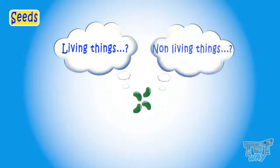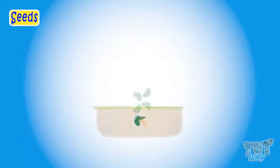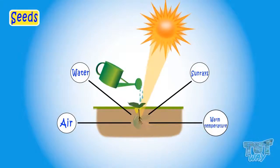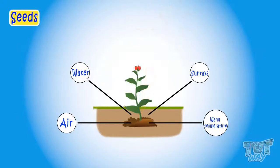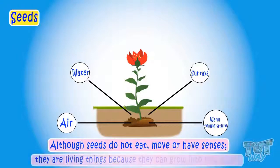Kids, can you tell me, are seeds living things or non-living things? Let's see. Each seed contains the things it needs to grow into a new plant. If a seed gets a suitable environment like water, sunlight, warmth, and an adequate amount, a small plant comes out of it. So kids, although seeds do not eat, move, or have senses, they are living things because they can grow into new plants in a suitable environment.